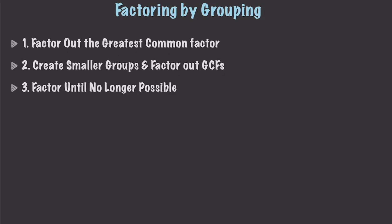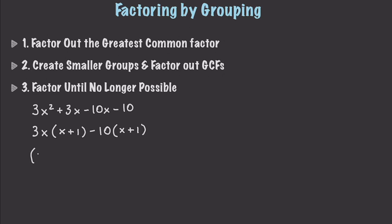Let's try 3x² + 3x − 10x − 10. Factoring by grouping: 3x times (x + 1) minus 10 times (x + 1). Taking out the common factor gives us a final result of (x + 1)(3x − 10).